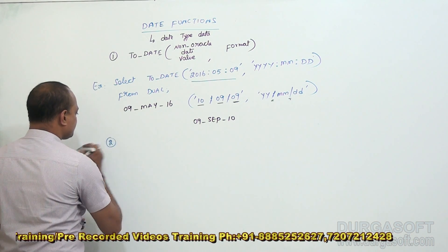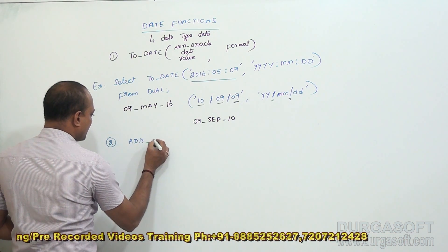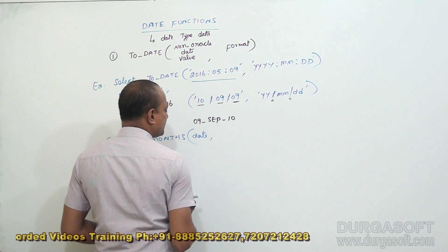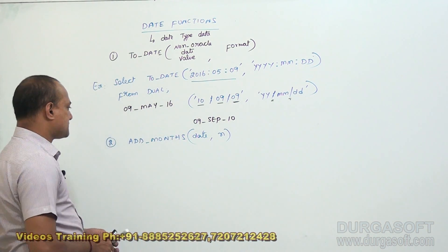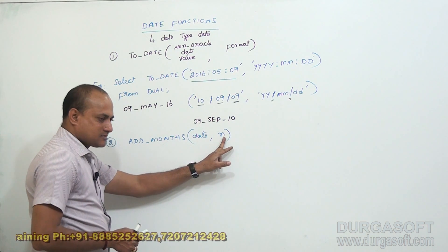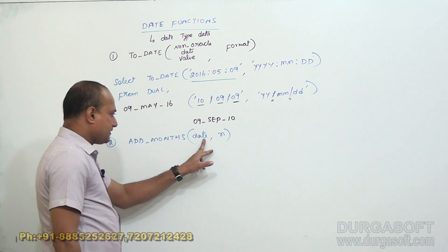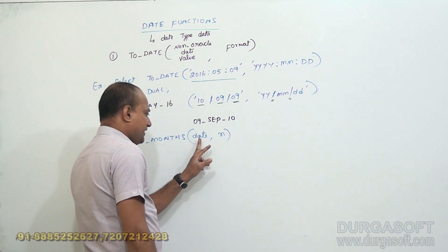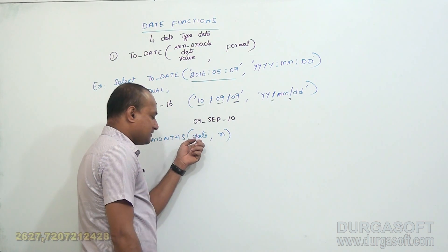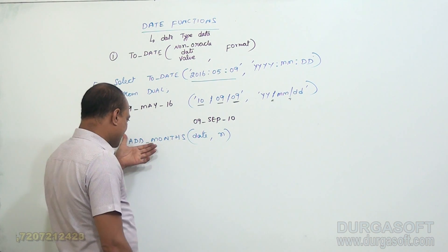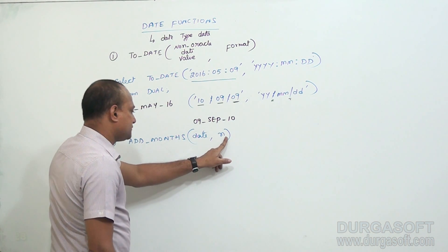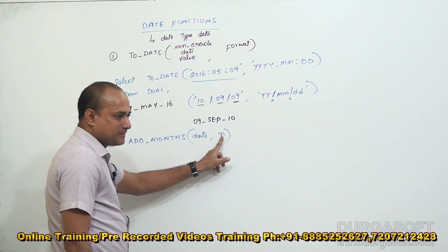The second function is ADD_MONTHS. The syntax is ADD_MONTHS(date value, n). This function adds N number of months to the given date. After adding N months, a resultant date is produced and displayed — so finally, the function displays a date value after adding N months to the existing date.